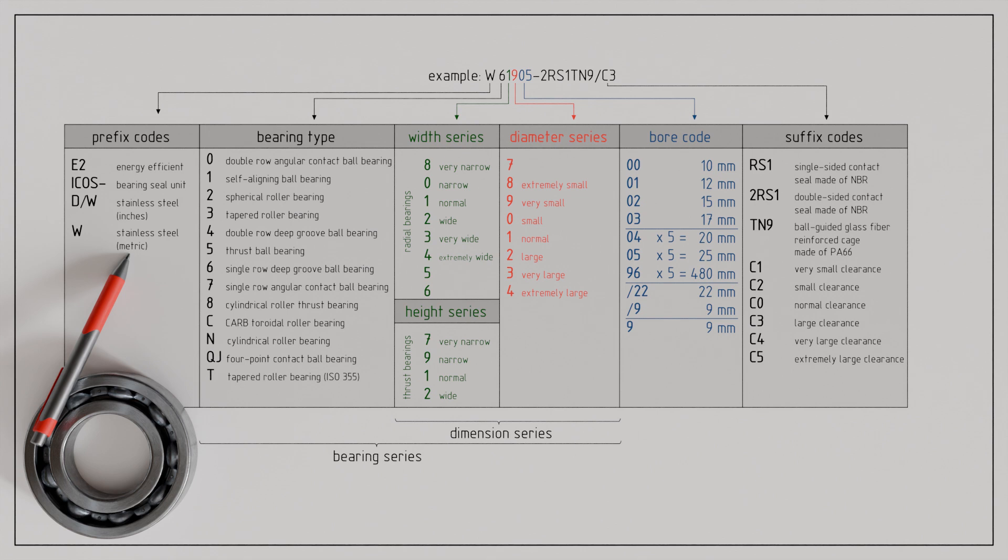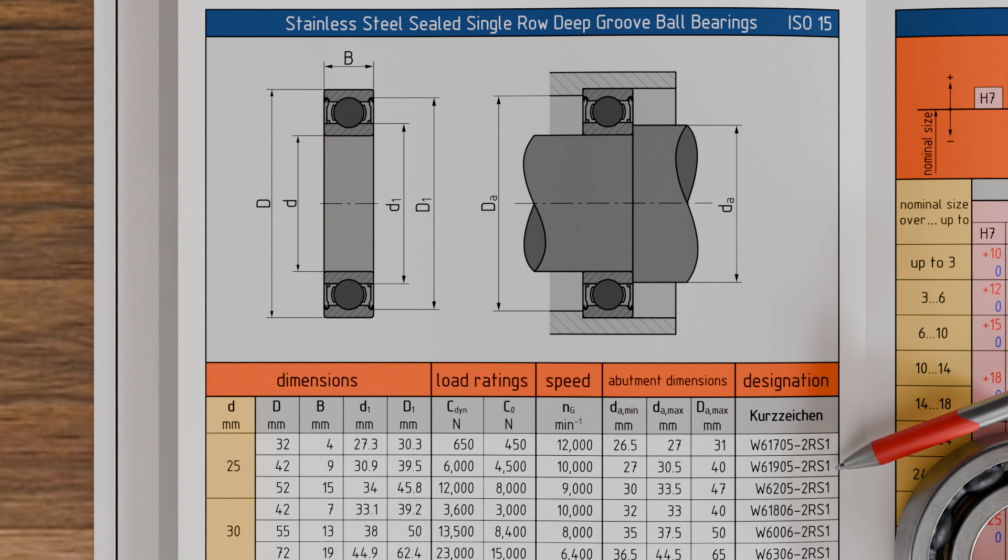All bearing data can be found in the catalogs of the respective rolling bearing manufacturers. For our sealed bearing 61905 made of stainless steel, as explained earlier, the bore diameter is 25 mm. The outer diameter of the bearing is 42 mm with a bearing width of 9 mm.